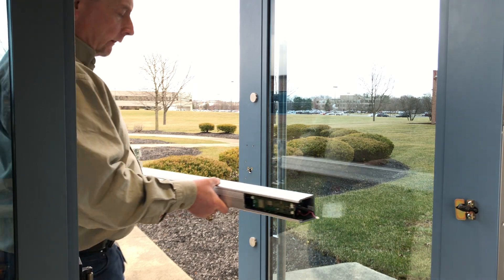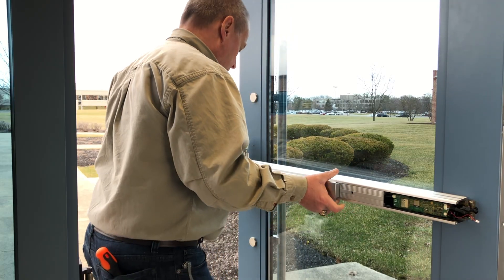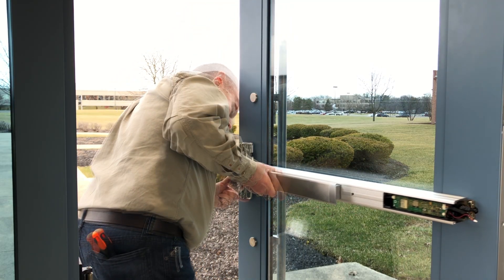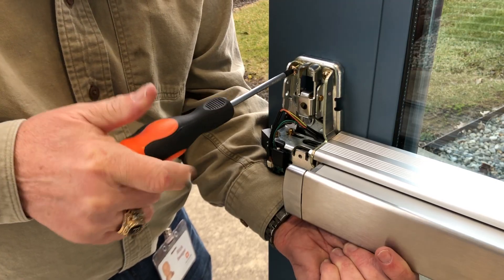Gently slide the exit device into the end cap bracket on the door. Then, install the device and trim if necessary, fully securing the center case with all six screws.